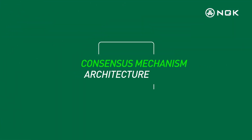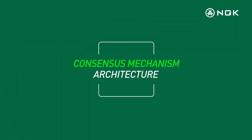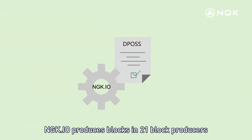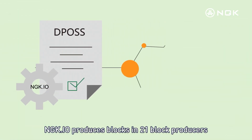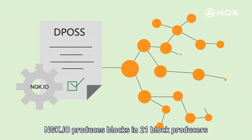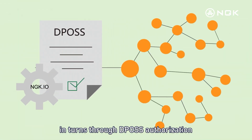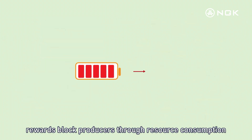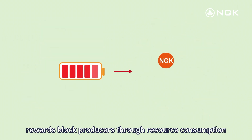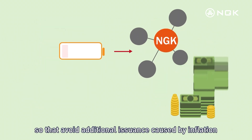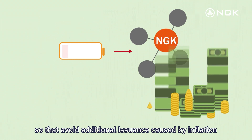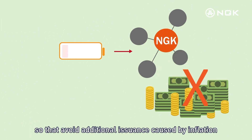Consensus Mechanism Architecture. NGK.io produces blocks with 21 block producers through DPoS authorization, rewards block producers through resource consumption, thus avoiding additional token issuance caused by inflation.